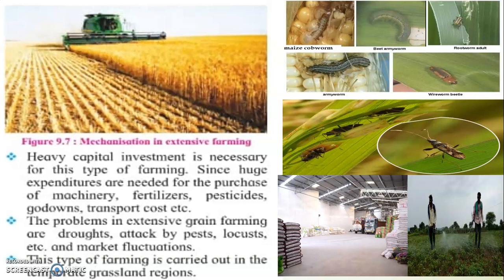Along with the advantages of monocrop farming and large hectares of land with technology, there are some limitations. Because of farming on more than 200 hectares of land, heavy capital investment is required to buy good amounts of seed, machines, manure, and fertilizer. Huge expenses are needed for the purchase of machinery, fertilizers, pesticides, storage godowns where food grains are stored for longer periods, and transportation. As you can see in the pictures — people spraying pesticides, godowns storing grain, and trucks for transport — all of this requires significant money.